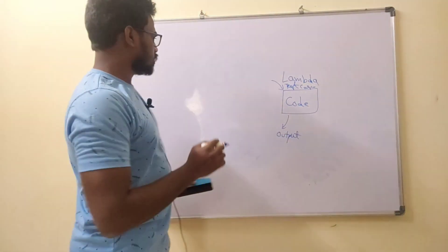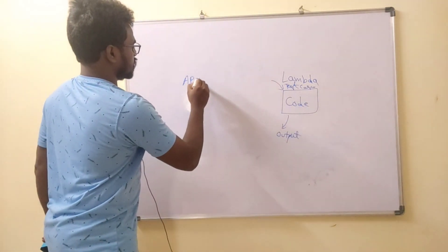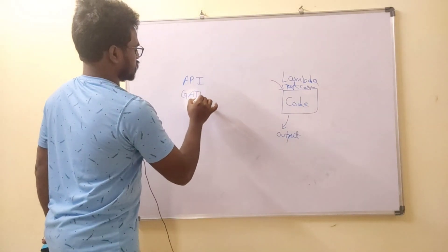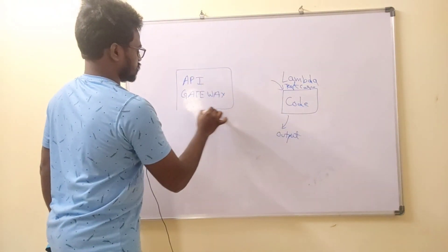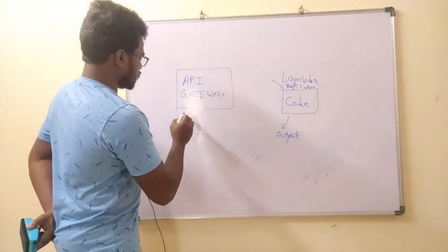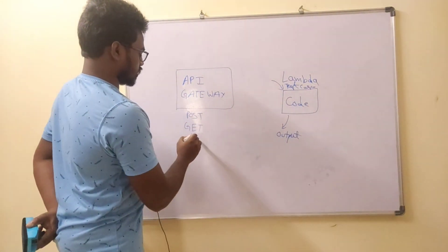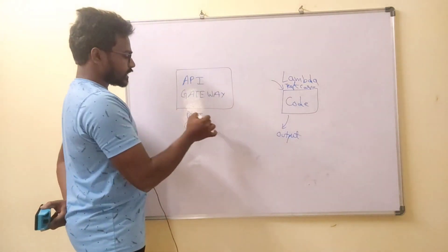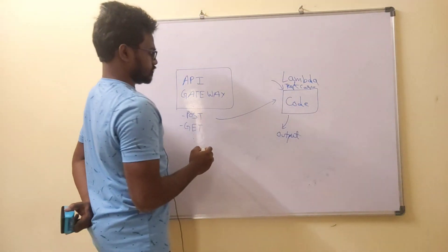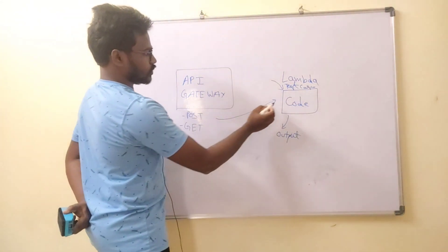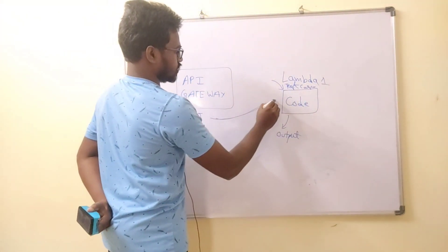As shown in the diagram, we will have an API Gateway where we can create any request — either a POST request, GET request, or any request — and we can connect this request to a Lambda function. For example, you can connect a POST request to Lambda 1 and connect that request to its corresponding code.